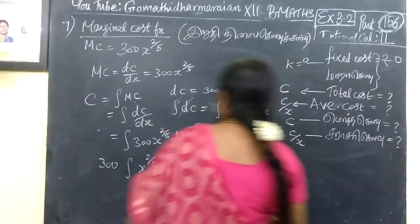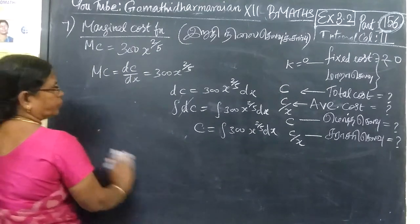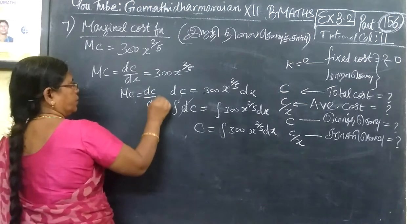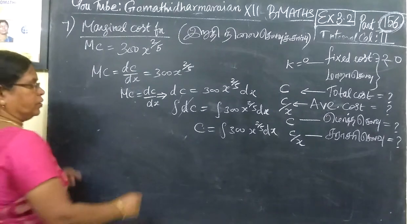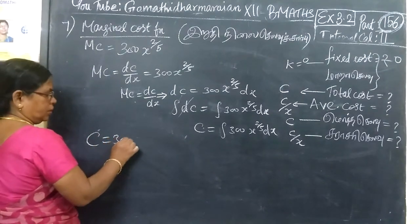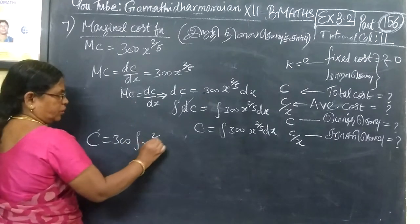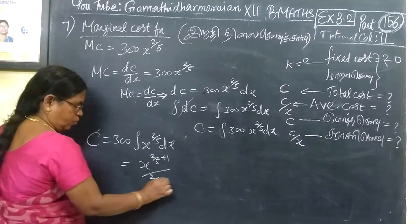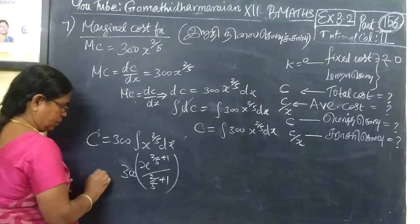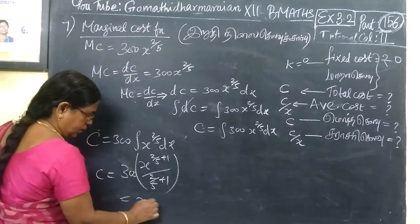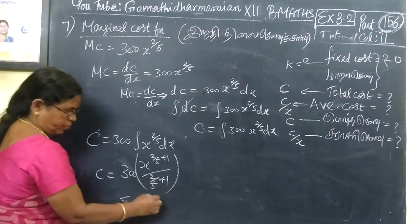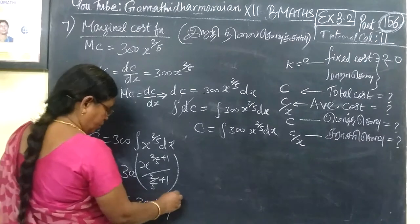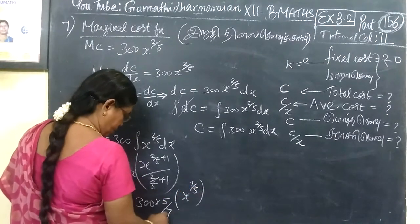C is integral of x power 2 by 5 DX, which is x power n plus 1 by n plus 1. So, 2 by 5 plus 1, then 2 by 5 plus 1. C equals to 300 times x power 7 by 5, then reciprocate to get 5 by 7.